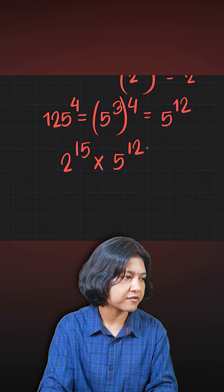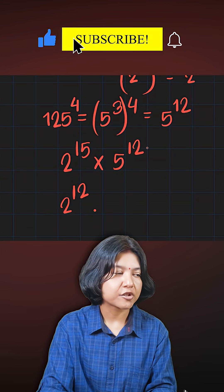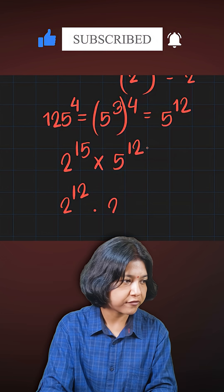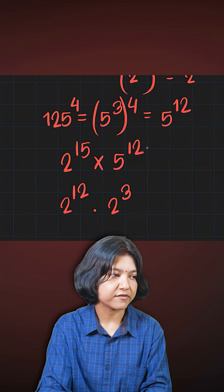You know the power of 2 here is 15. I can write it as 2 to the power of 12 times 2 to the power of 3, because 12 plus 3 is 15.